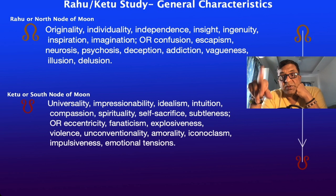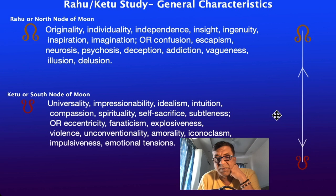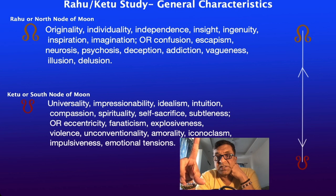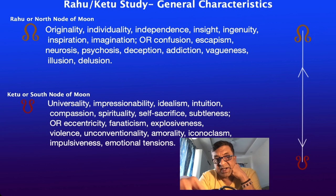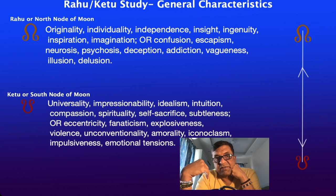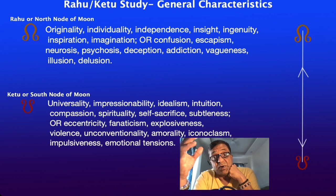Rahu-Ketu is typically an axis — 180 degrees apart — and it can play out in any one of the opposite houses: 1-7, 2-8, 3-9, 4-10, etc. This axis becomes a definition point of where in your life, in your different houses, you are looking for these two aspects. If Rahu is in the second house, Ketu will be in the eighth house — you bring the eighth house aspect with those characteristics. Of course, it plays out with something called dispositors.